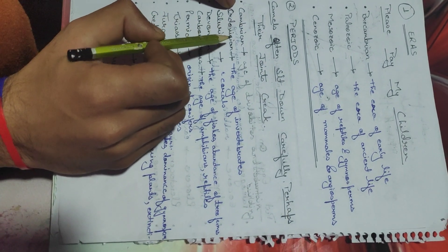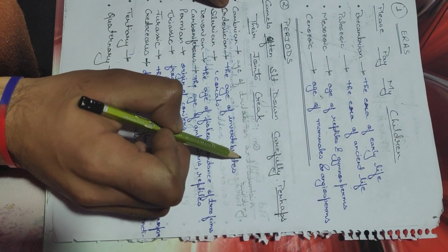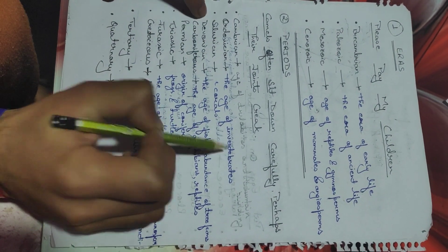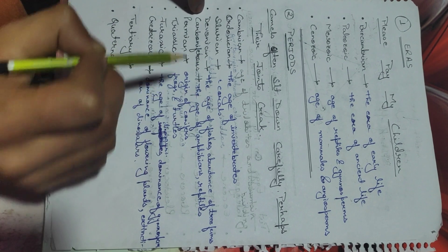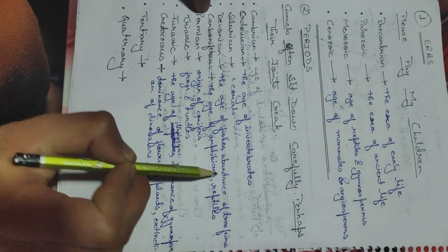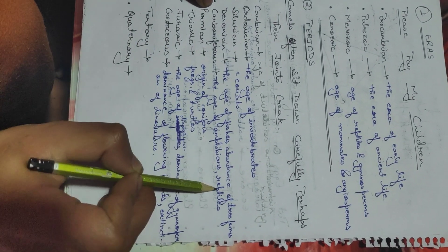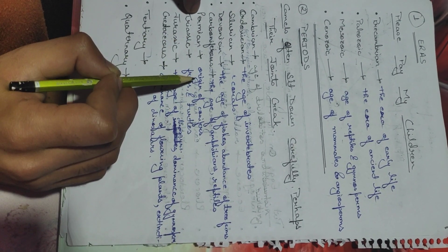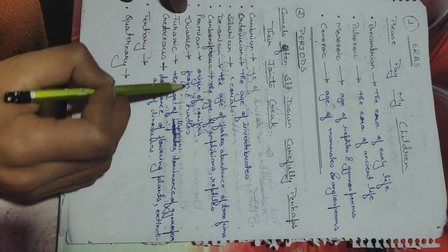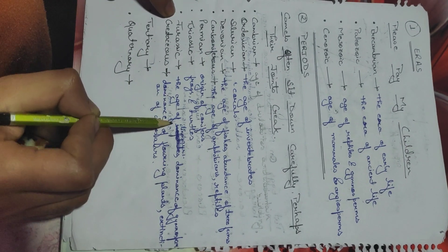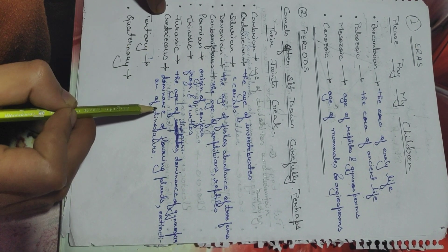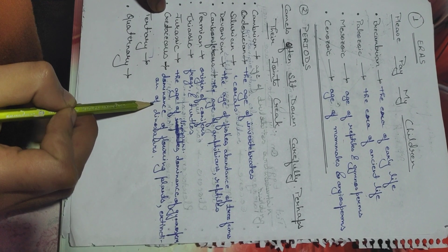Cambrian is the age of trilobites and mountain building. Ordovician is the age of invertebrates. Silurian is the age of corals. Devonian is the age of fishes and abundance of tree ferns. Carboniferous is the age of amphibians and reptiles. Permian marks the origin of conifers. Triassic is the age of frogs and turtles. Jurassic is the age of dinosaurs and dominance of gymnosperms. Cretaceous is marked by the dominance of flowering plants and extinction of dinosaurs.